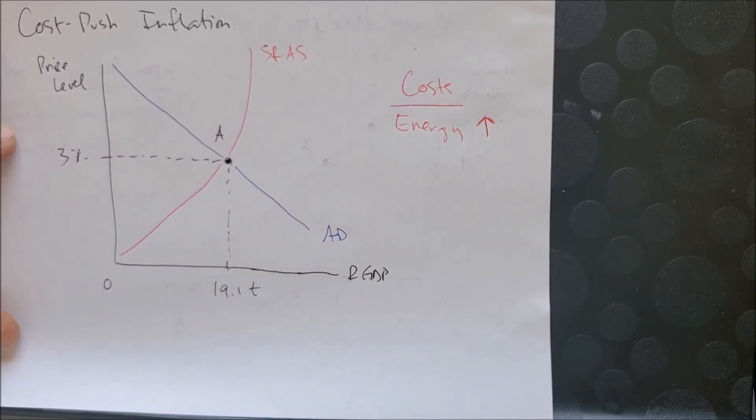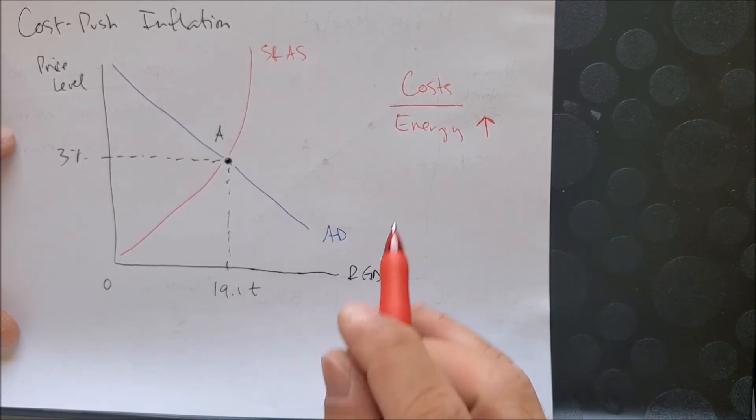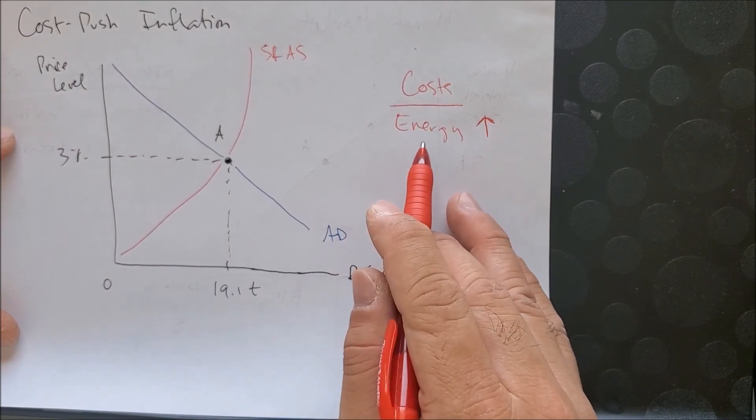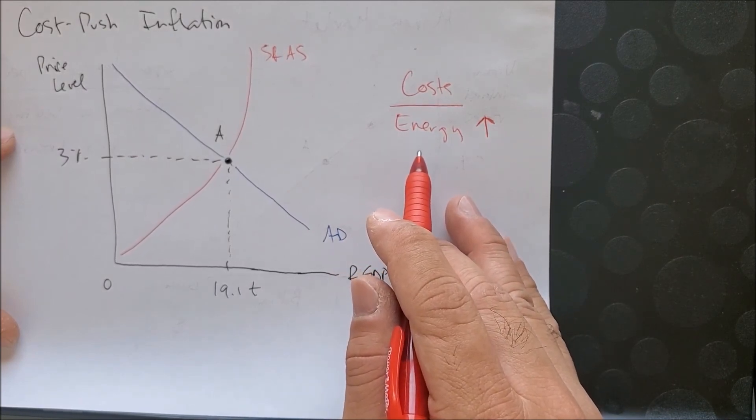We know that to make goods from vehicles, computers, tablets, you have to have energy to produce these goods. This increase in energy costs will make it more expensive to produce these goods.